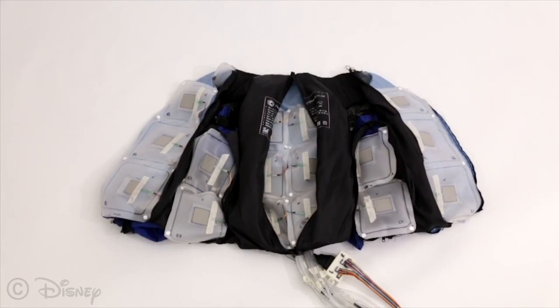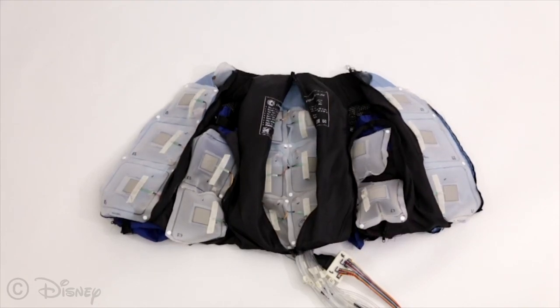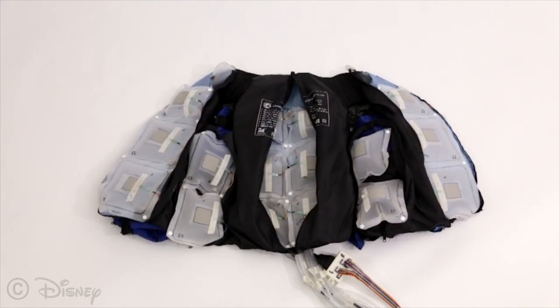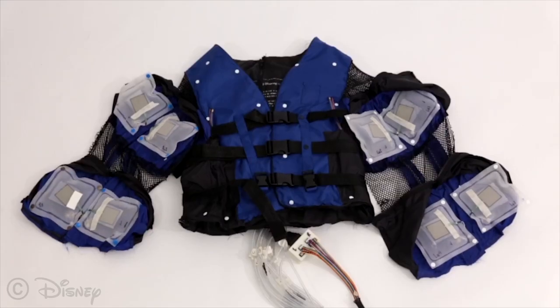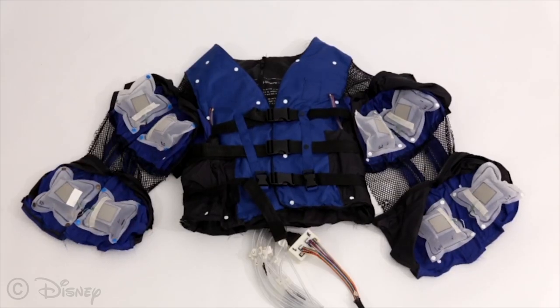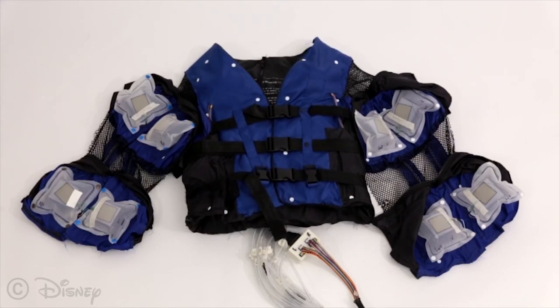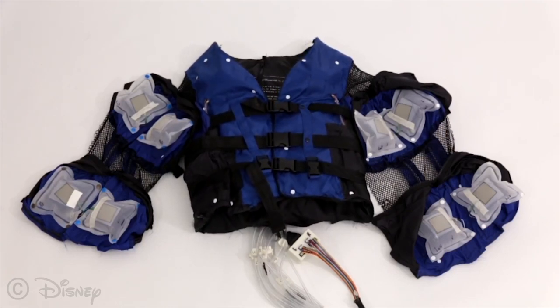The Force Jacket contains 26 inflatable compartments, each actuated using TNC microcontrollers. The controllers activate solenoid valves that are connected to a vacuum and an air compressor with servo air pressure control.